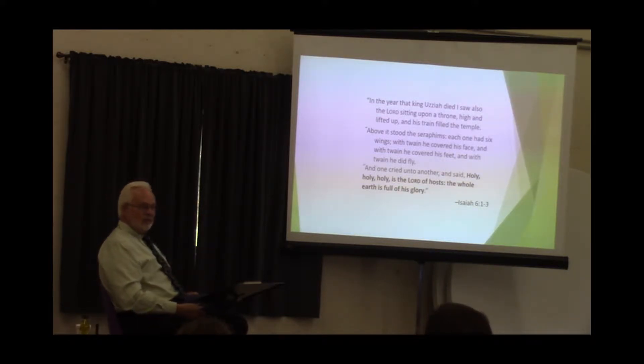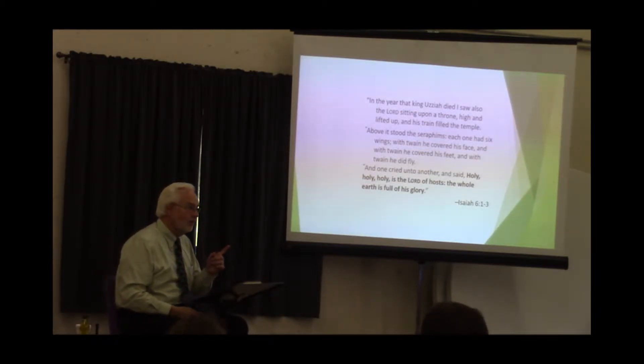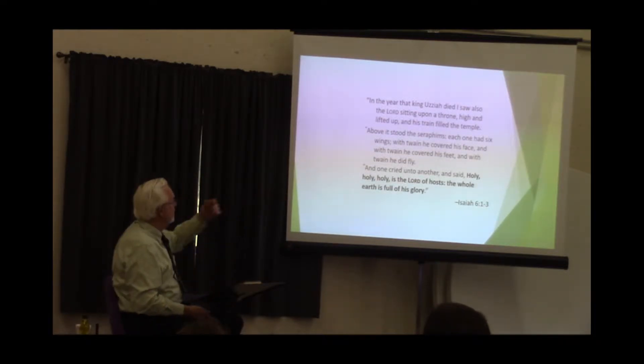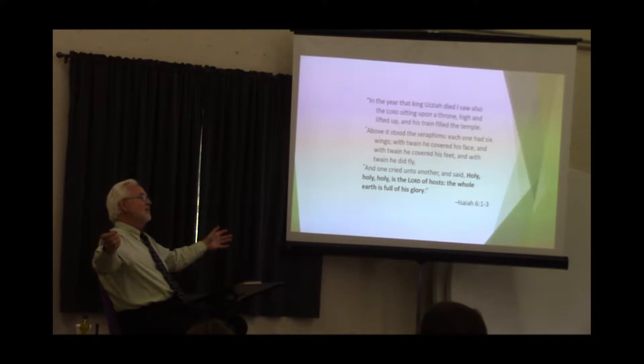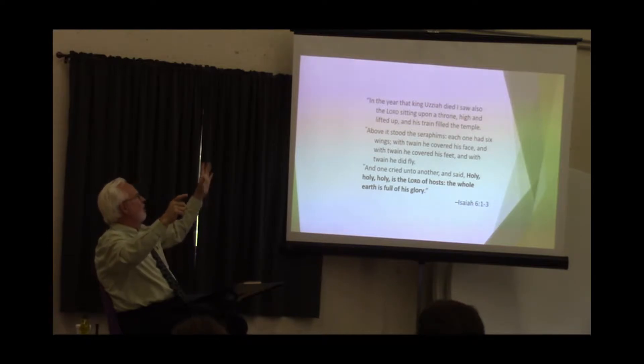Above it stood the seraphims. Each one had six wings, and that was probably a unique experience for Isaiah. A type of angel, six wings. He's seen birds with two wings. Maybe he's seen a dragonfly with four wings. But six wings. With twain he covers his face. And with twain he covers his feet. And with twain he did fly. And one cried unto another of the seraphim and said, Holy, Holy, Holy is the Lord God of hosts. The whole earth is full of his glory.